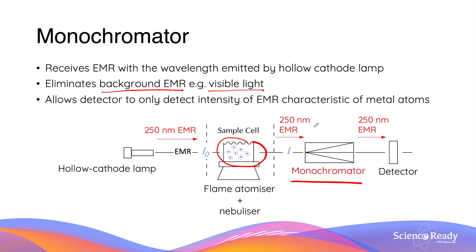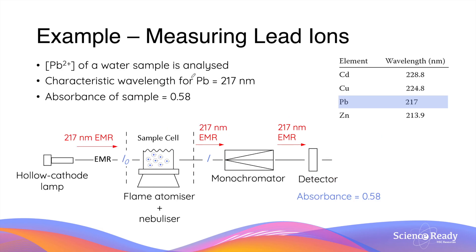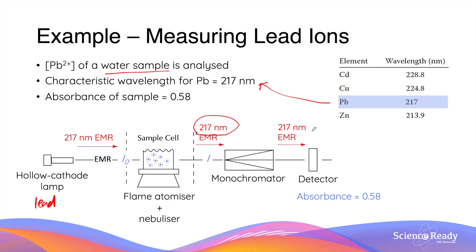Finally, the absorbance is calculated using Beer-Lambert law, comparing the final intensity with the initial intensity I₀. Let's summarise everything in an example: we want to analyse the lead concentration in a water sample. From the table, lead atoms absorb a characteristic wavelength of 270 nm. So we use a hollow cathode lamp made of lead to produce this EMR. As the EMR passes through the flame which atomises the water sample, part of the radiation is absorbed by the lead atoms present. When the EMR exits the flame, it is passed through a monochromator which only passes radiation of 270 nm, and then the detector measures the intensity of this radiation to calculate the absorbance.